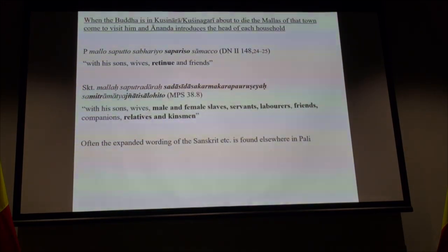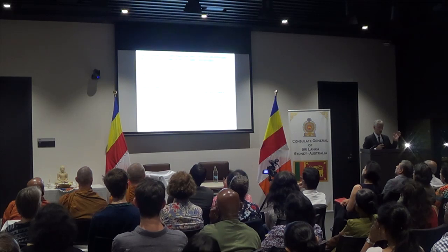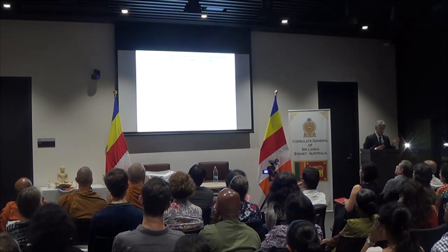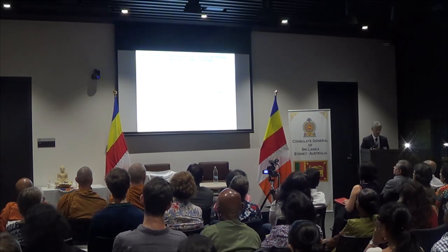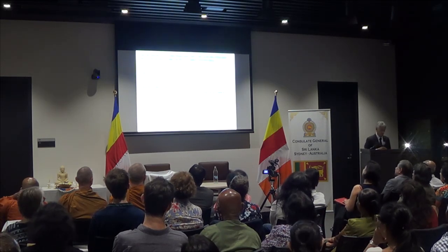One possibility is that the editors of the Sanskrit version were facing a tendency in Buddhist communities to increasingly deify the Buddha, and this passage was to emphasise he was a human being — 80 years old, his body falling to pieces. Another example of expansion: in the Pali, when the Malas come, Ananda introduces the head of the household 'with his son's wife's retinue and friends.' The Sanskrit expands this to 'with his son's wife's male and female slaves, servants, labourers, friends, companions, relatives, and kinsmen.' It's beautified; meaning hasn't changed much.